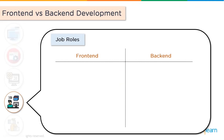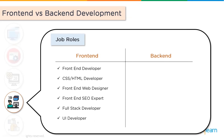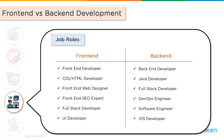Now let's look at some of the job roles for front end and back end development. For front end, we have the front end developer, the CSS or HTML developer, front end web designer, front end SEO expert, full stack developer, and a UI developer. For back end, there's back end developer, Java developer, full stack developer, DevOps engineer, software engineer, and an iOS developer.